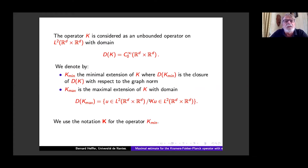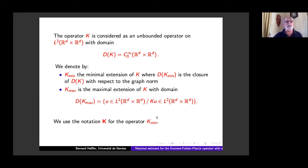If we start from the small domain C₀^∞(R^d × R^d) and look at the closure for the graph norm, we get the so-called K_min. One can also consider the maximal extension of K, whose domain D(K_max) is the set of u in L² such that Ku in the sense of distributions is in L². I will use the bold notation for K_min. The first question is: under which condition can we have the equality of K_min with K_max? In the self-adjoint case, this corresponds to the discussion about essential self-adjointness — if you start from the very small domain and take the closure, do you get the maximal domain?